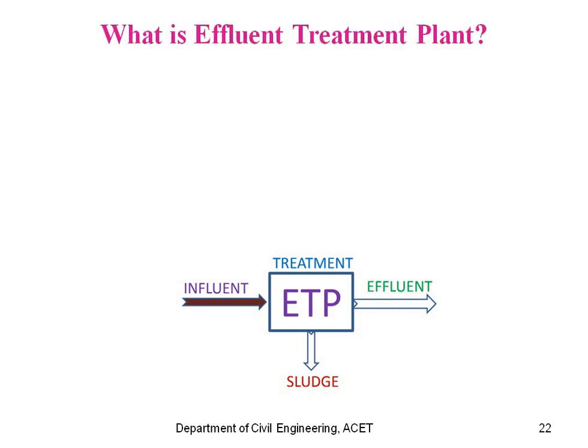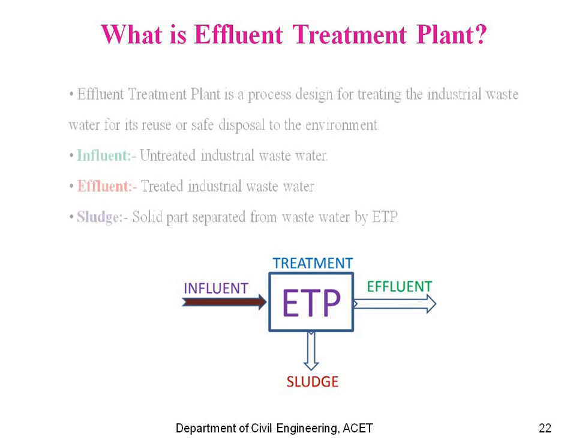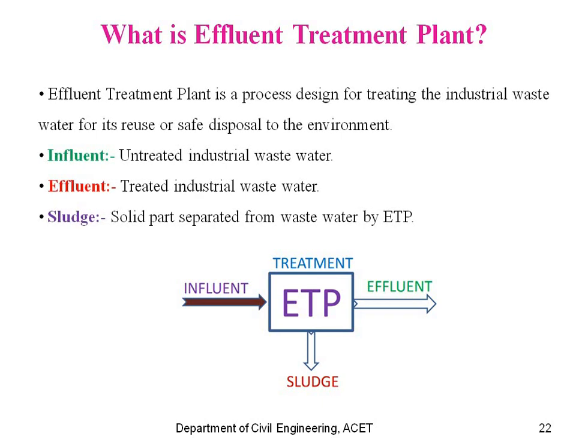What is an effluent treatment plant? Effluent treatment plant is a process designed for treating industrial waste water for its reuse or safe disposal to the environment. It includes: effluent, meaning untreated industrial water; treated industrial waste water; and sludge, which is the solid parts separated from water by the ETP.